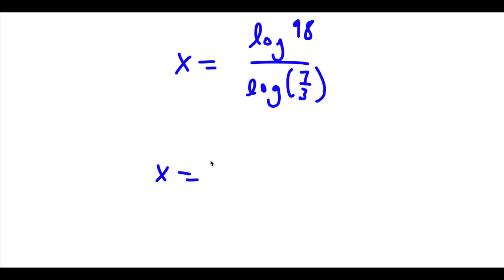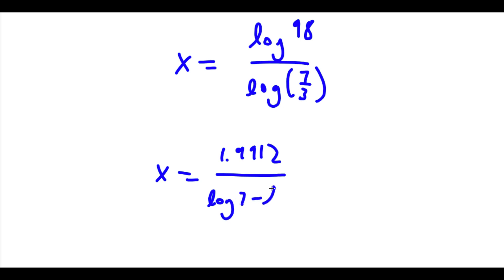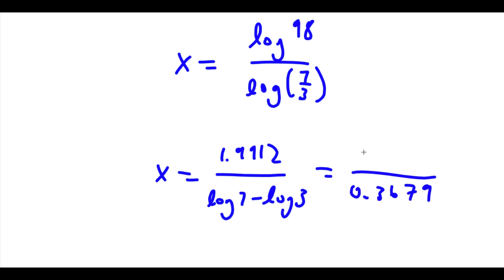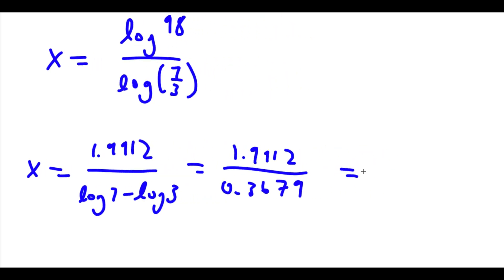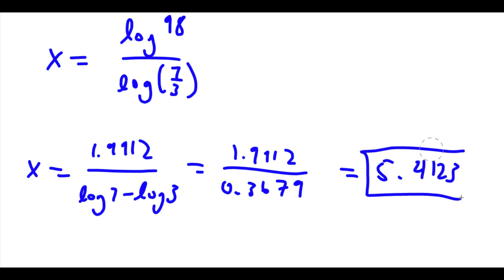Now log 98 is approximately 1.9912, and log(7/3) equals log 7 minus log 3, which is approximately 0.3679. So x equals 1.9912 over 0.3679, which equals approximately 5.4123. So this is our answer.